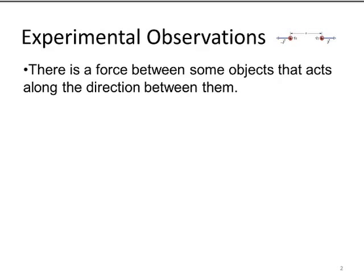We have to start out in experimental physics asking what are the observations. Under certain circumstances, we have the observation that there is a force between some objects that acts along the direction between them, and that force is not a gravitational force.